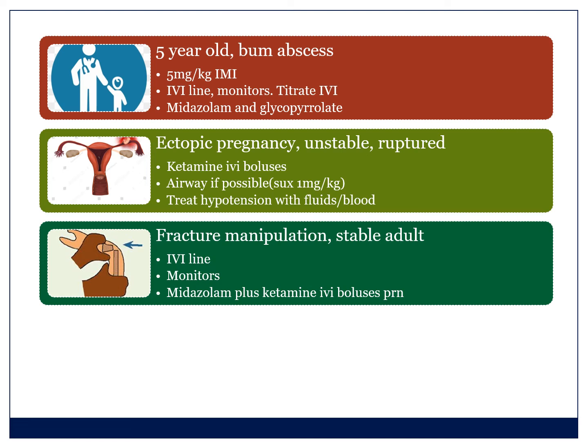For a fracture manipulation in ED with a stable adult patient, I would try to fast the patient, put up an IV line, and put monitors on — an ECG monitor, a BP cuff, and a SATs monitor. I would give midazolam, something like two and a half to five milligrams, and then titrate in the ketamine at half a milligram per kilogram at a time until I reach the level where I can manipulate the fracture. Then I would keep the patient in ED until they've woken up.